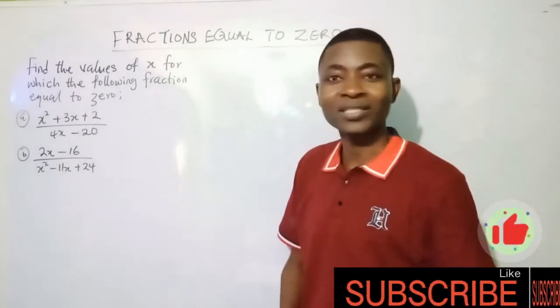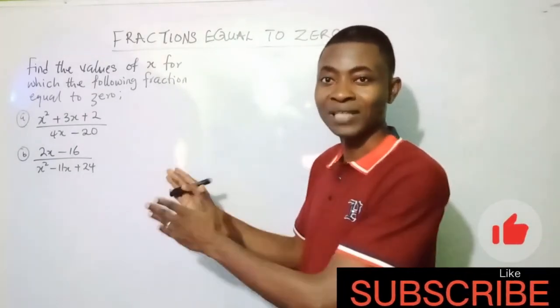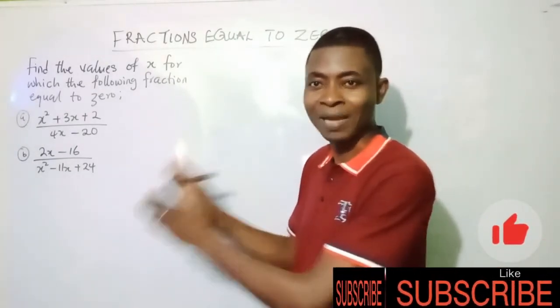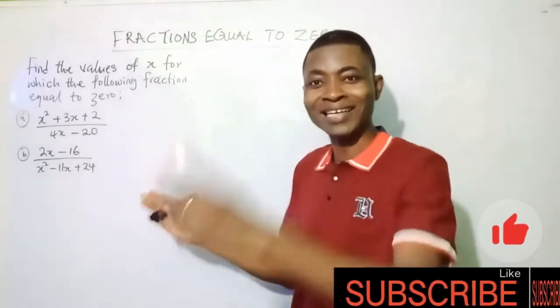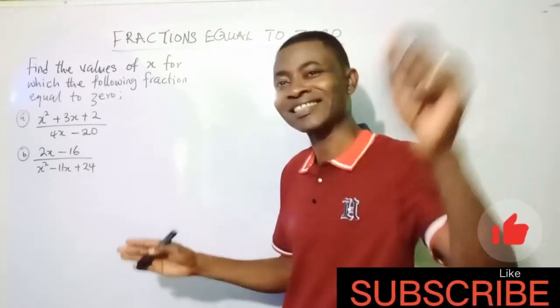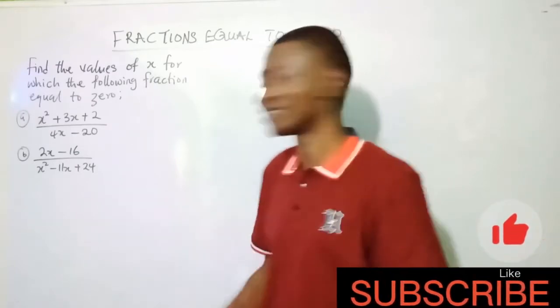Sometimes you can find questions like this where you'll be required to find the values of x for which the following fraction equals zero. When you see a question like that, how can you solve it? It's actually very simple. It's not difficult at all.